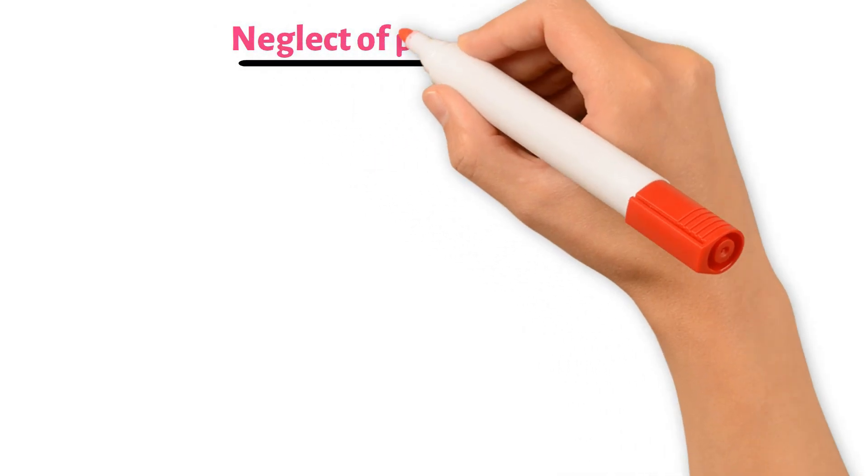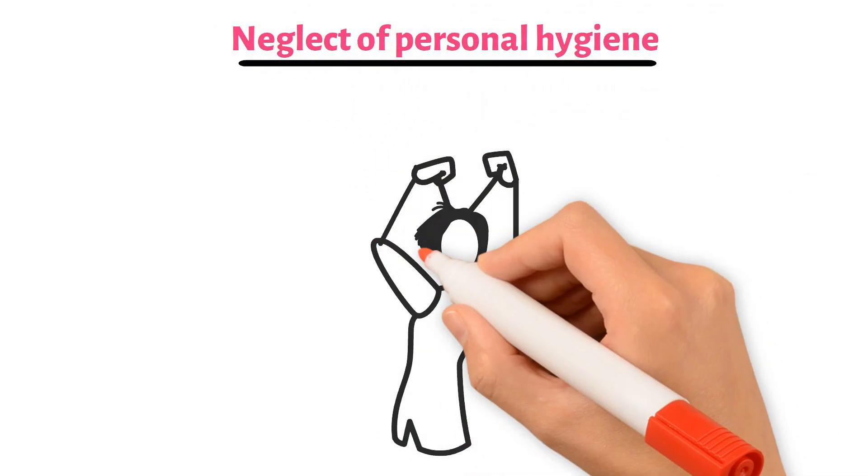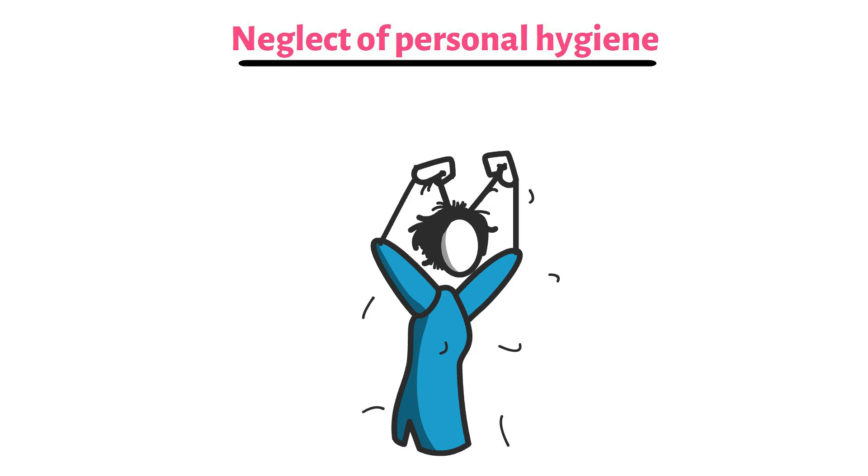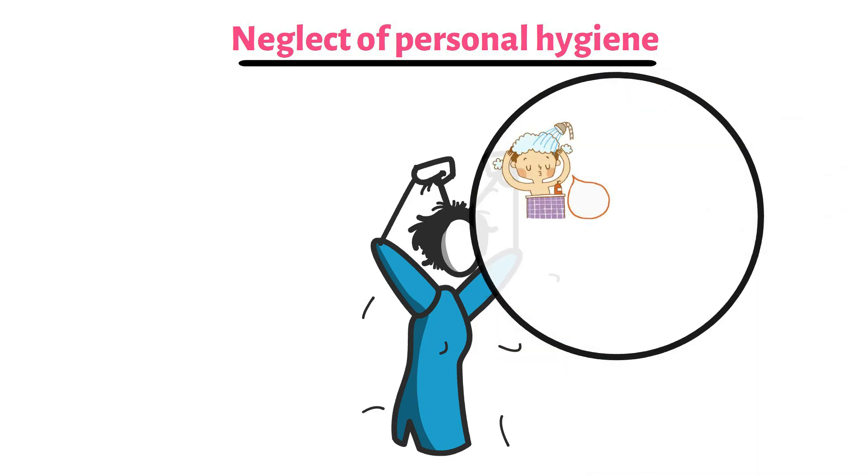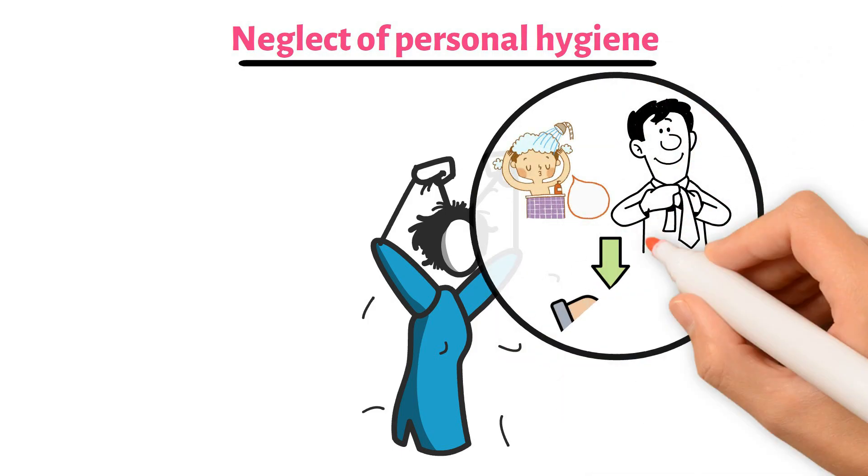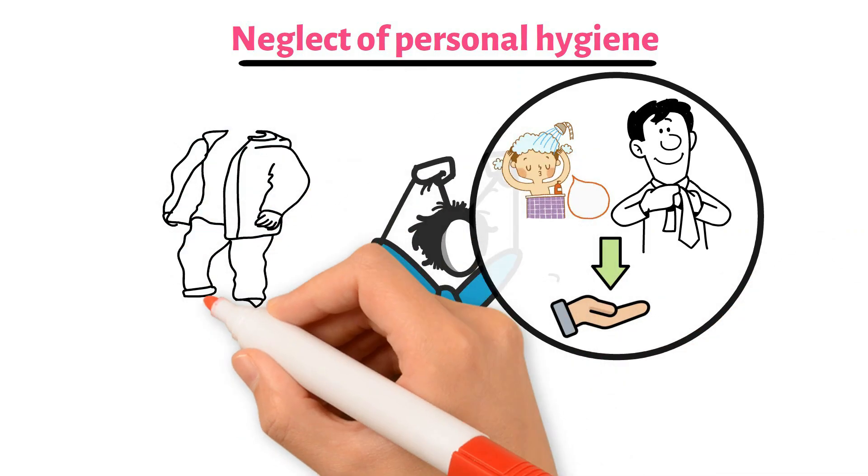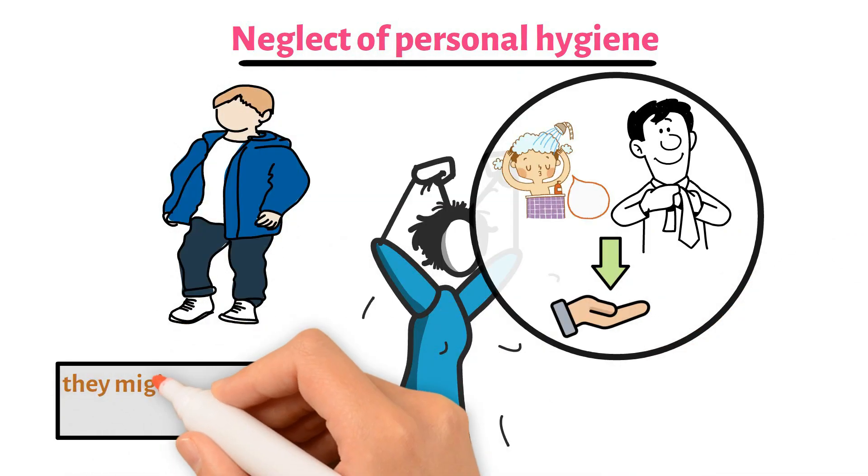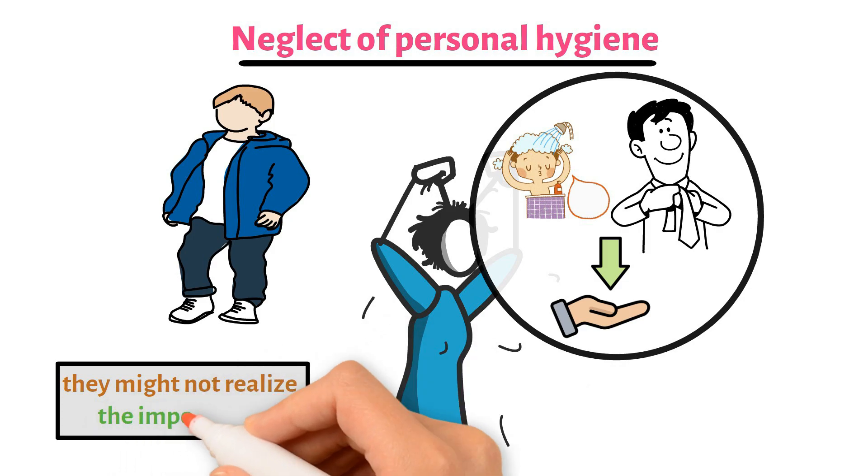Next, neglect of personal hygiene. People with schizophrenia might stop taking care of themselves. This could include not bathing, changing clothes, or attending to basic personal needs. This isn't because they don't want to be clean. Rather, they might not realize the importance or lack the motivation to do so.